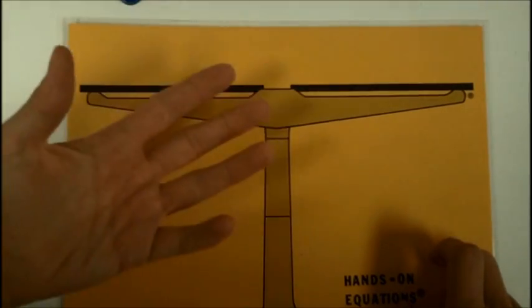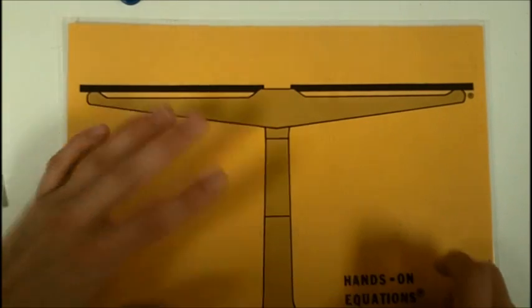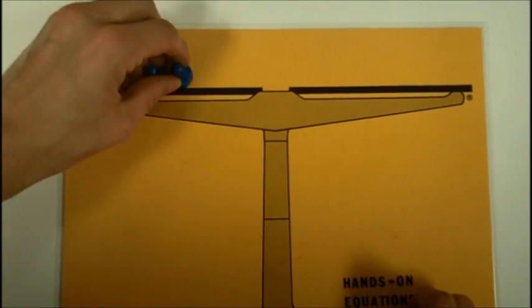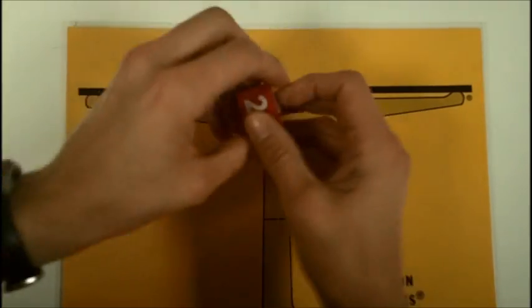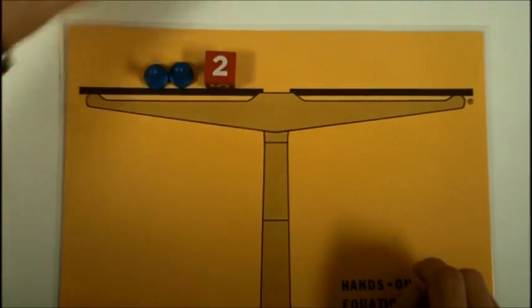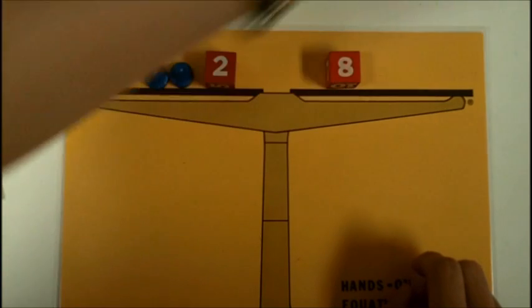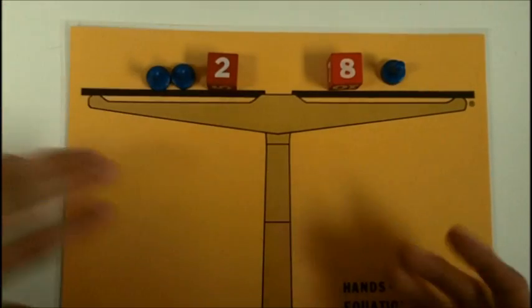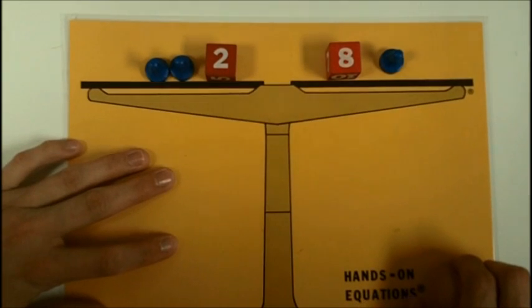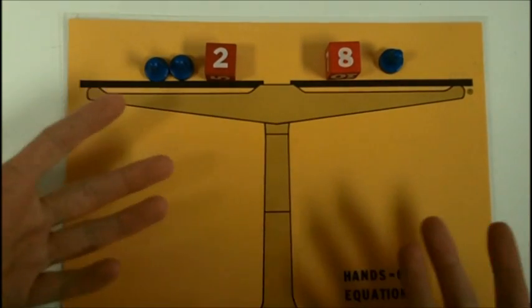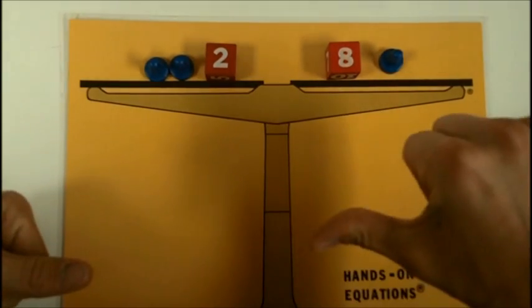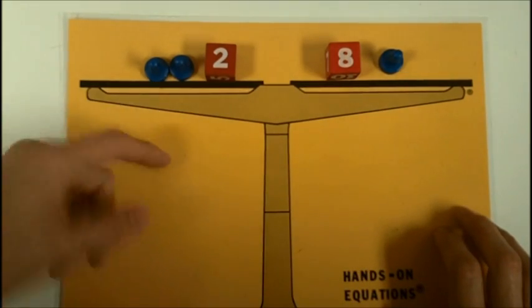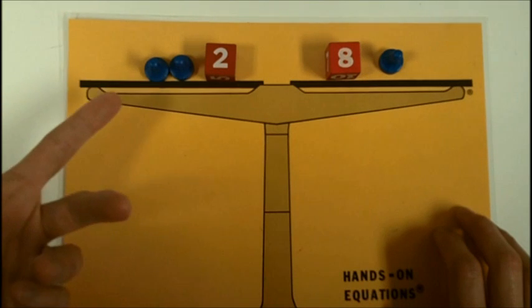Let's do an even harder example and demonstrate how we're going to use guess and check to solve what the pawn is worth. This time, I'm going to put two pawns and a 2 on the left-hand side. On the right-hand side, I'm going to put an 8 and a pawn. It makes sense every single time to start as low as we possibly can. So, let's see if the pawn could be worth 1. This is 1 plus 1 would be 2 plus 2 would be 4.